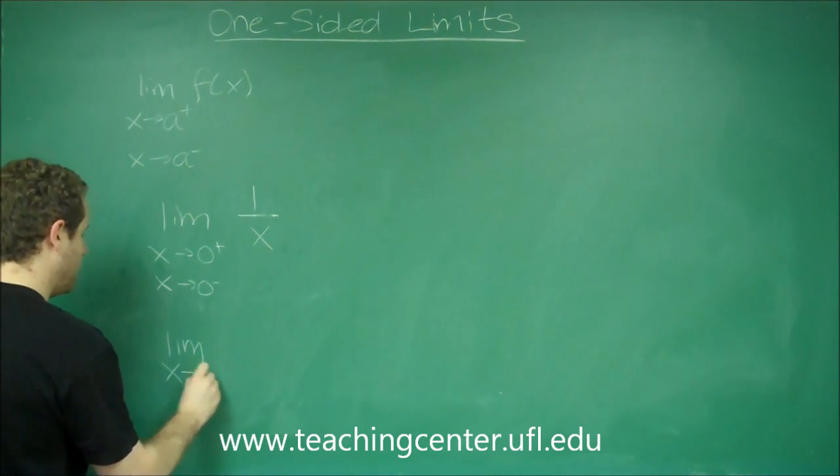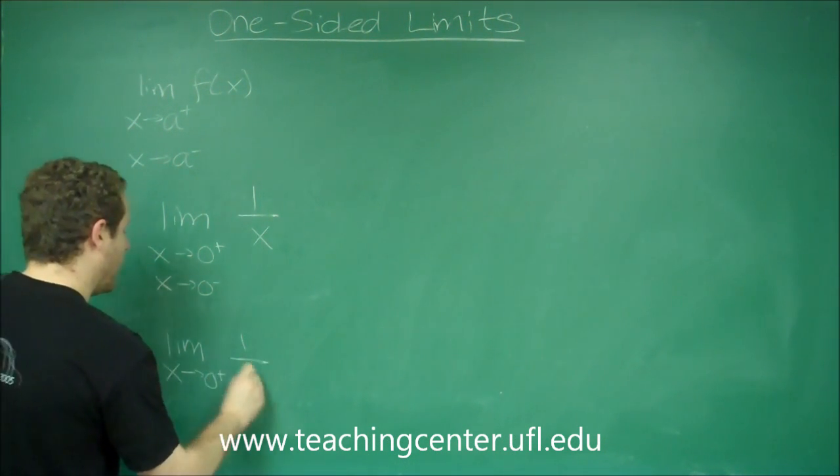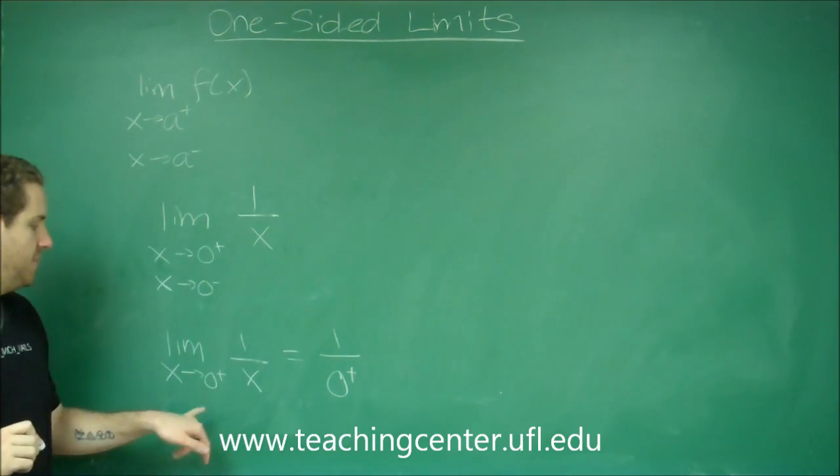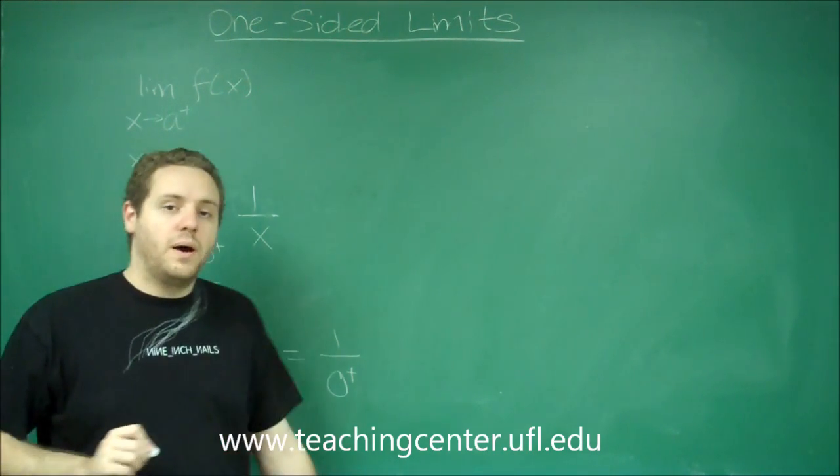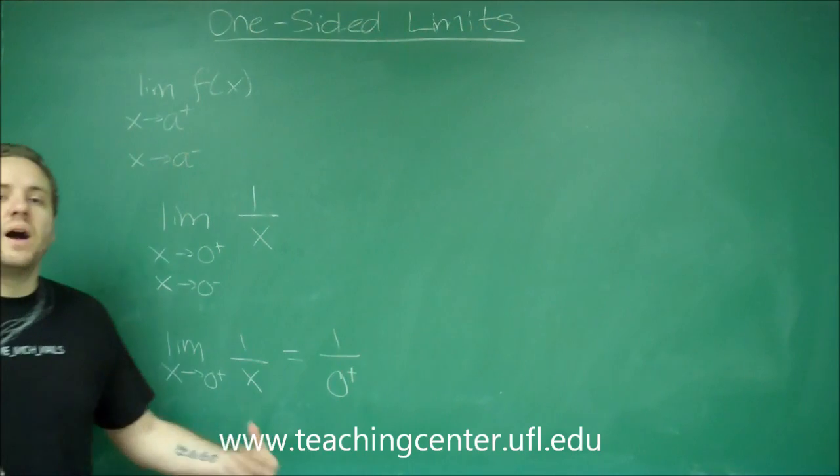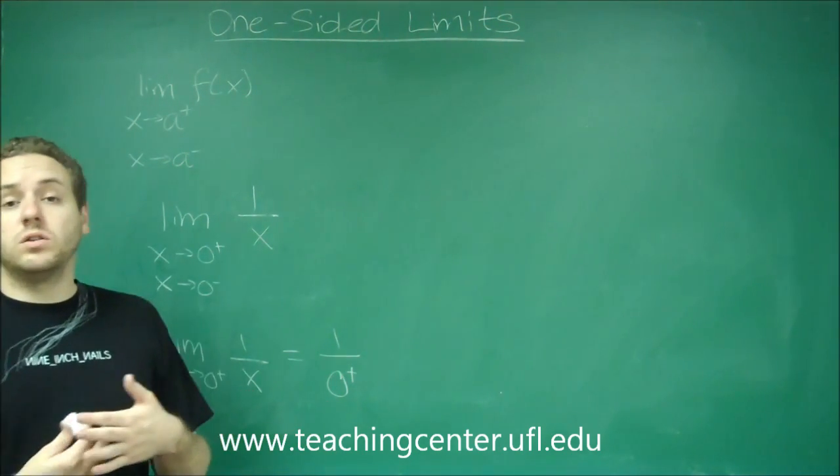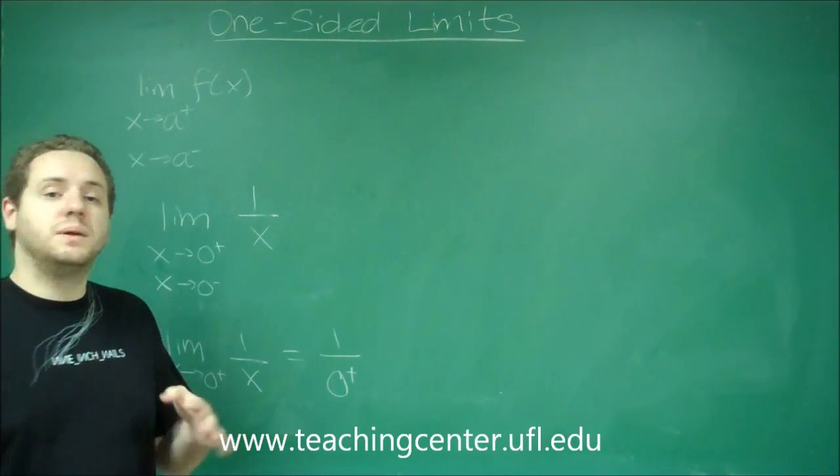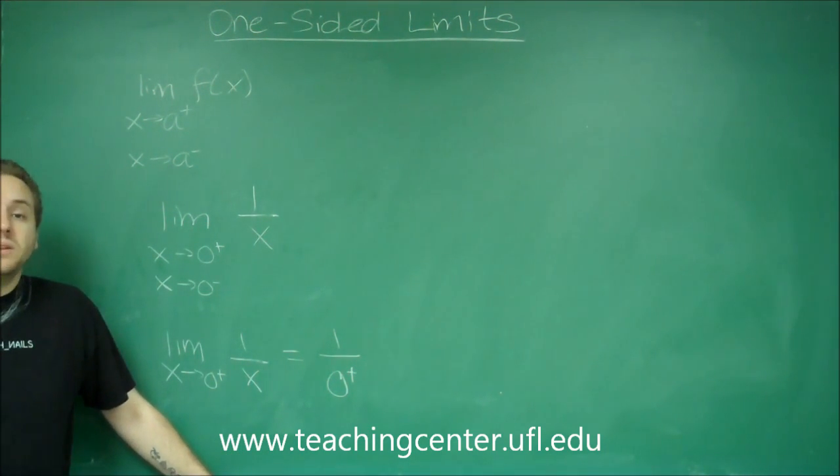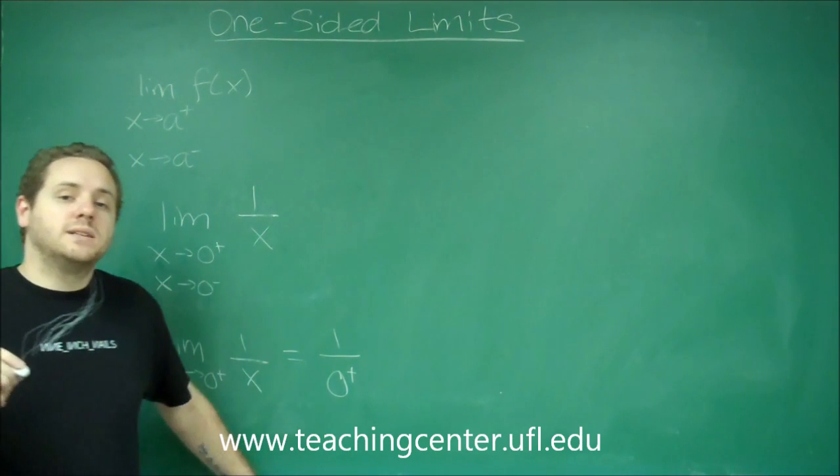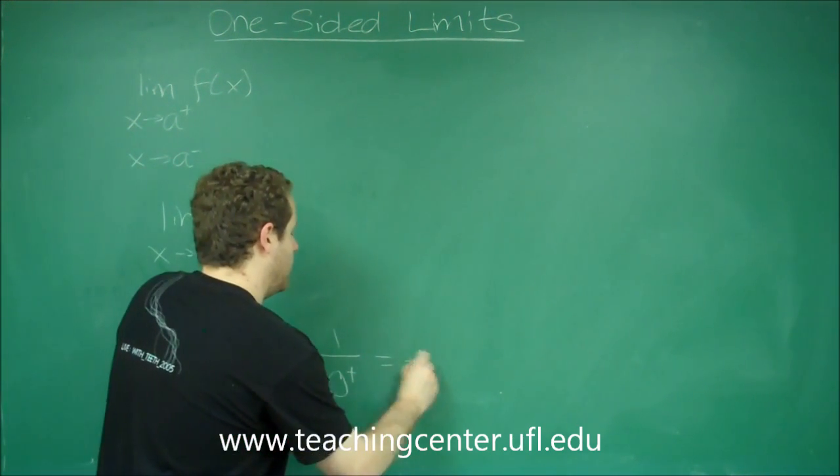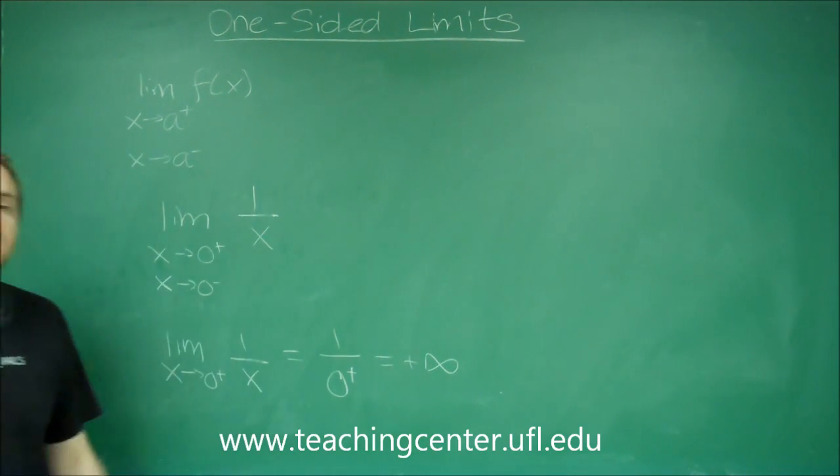So the limit as we approach zero from the right of one over x, I like to write it like this so you can just keep that in your mind. Small positive number. So if you think about it, whenever you divide by a number that's smaller than one, your number gets bigger and bigger. And as this number gets smaller and smaller, the number continually gets bigger. And since we're getting as small as we possibly can and they're always going to be positive, this is going to be positive infinity.